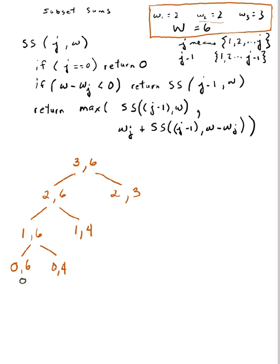Okay, here, J is 0, so I'm returning 0. There. Okay, so now I've returned 0 and 0 from these two calls. And now I need to add right here, WJ. So that's W1 to this 0 right here. So that's 2 plus 0 gives me 2. So the return value there is 2.